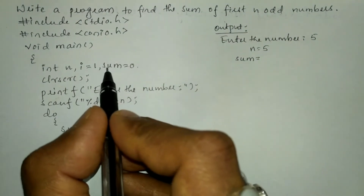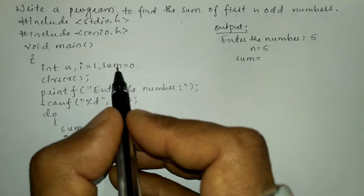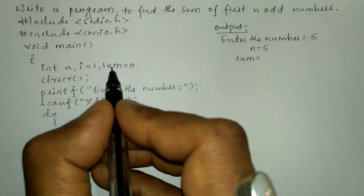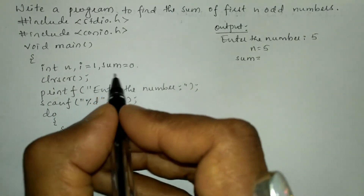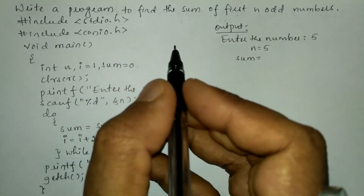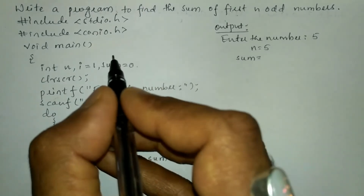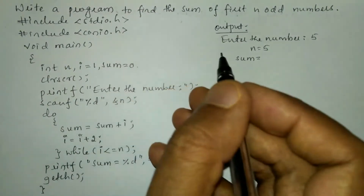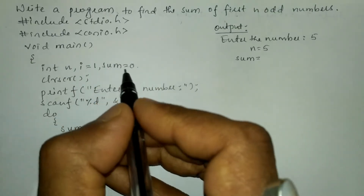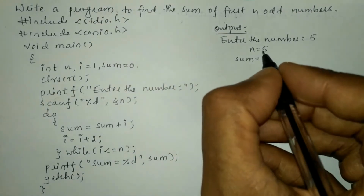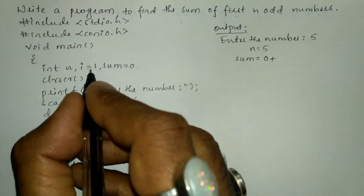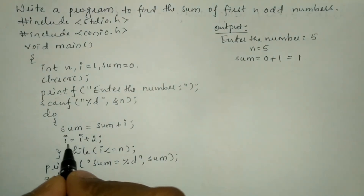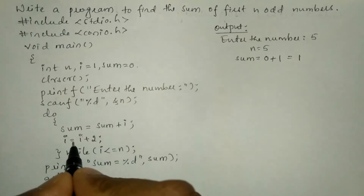If we do not set sum equal to zero, it takes a garbage value — meaning the value already stored in the memory location labeled 'sum'. That memory location may contain a value previously used by some other program, so that value is garbage for us. To reset it, we write sum equal to zero. So for the first time: sum is zero plus i, and i equals one, so zero plus one equals one. One will be stored in sum. Now i is equal to i plus two, so i becomes three.